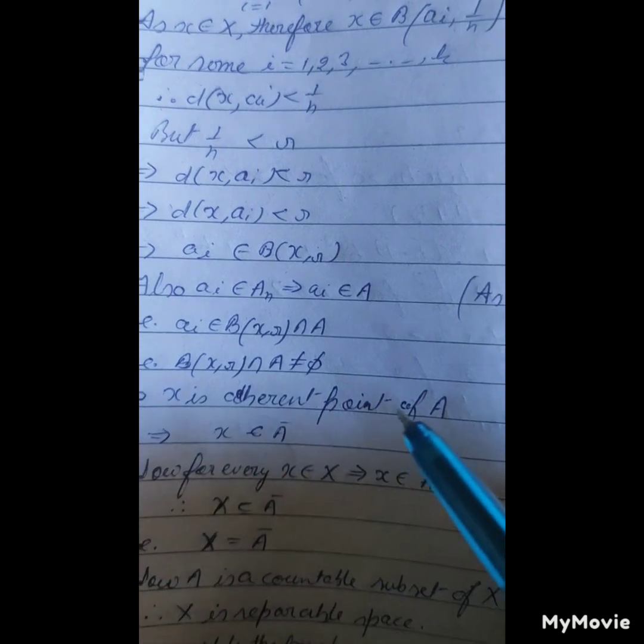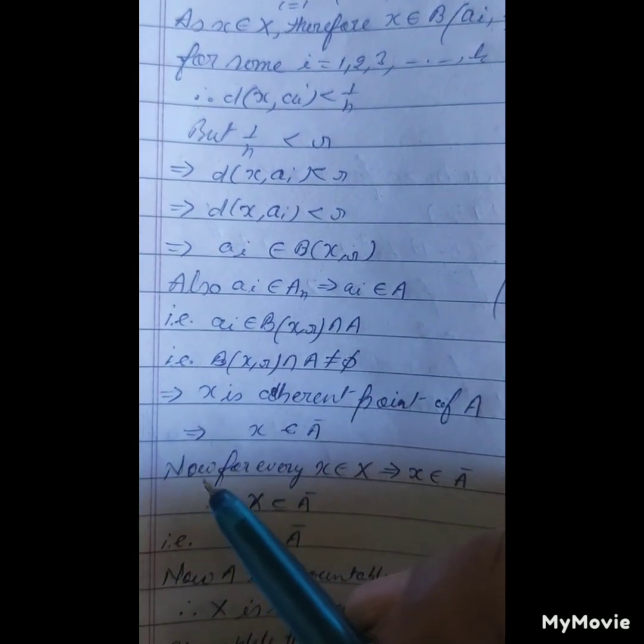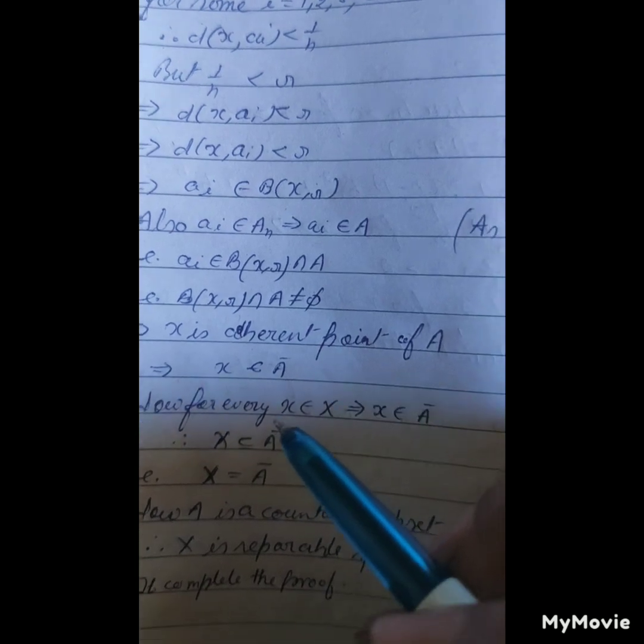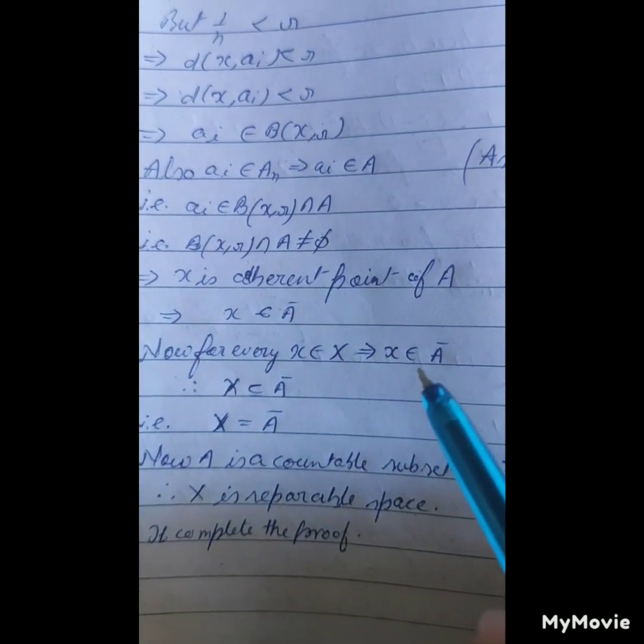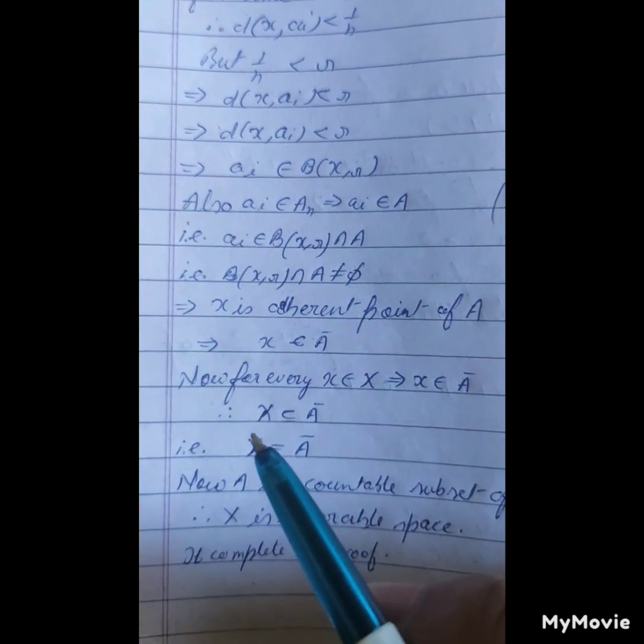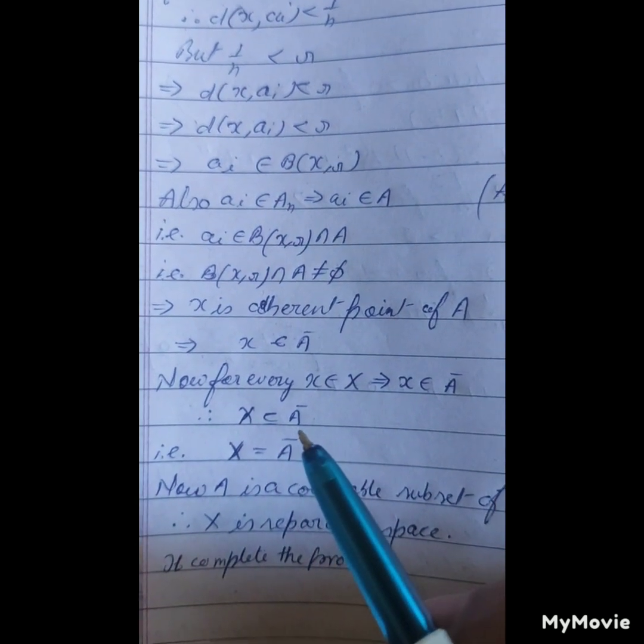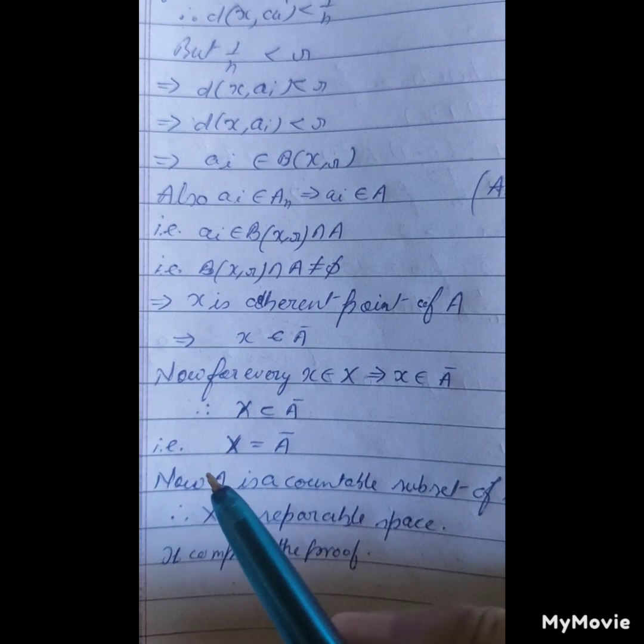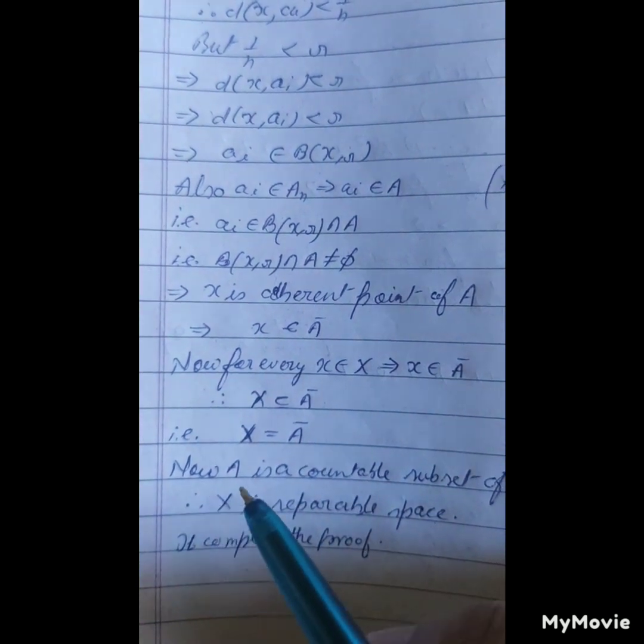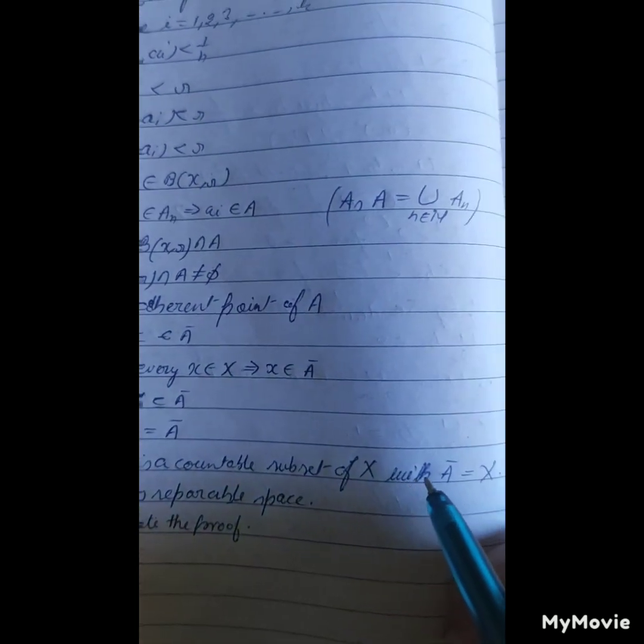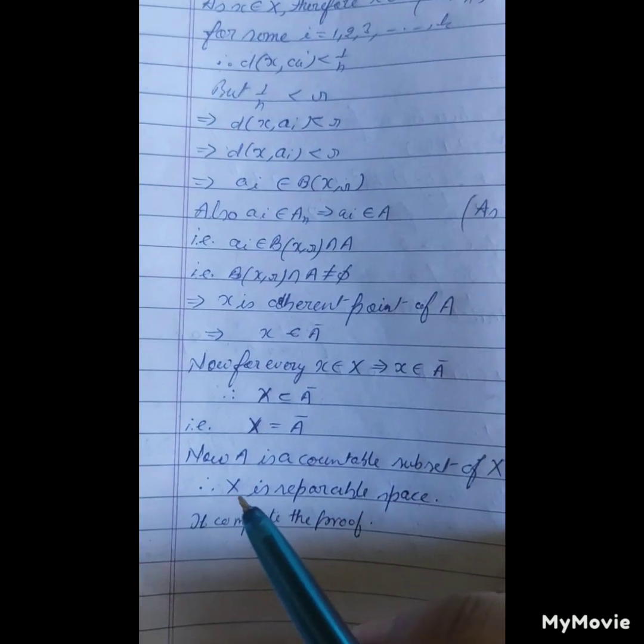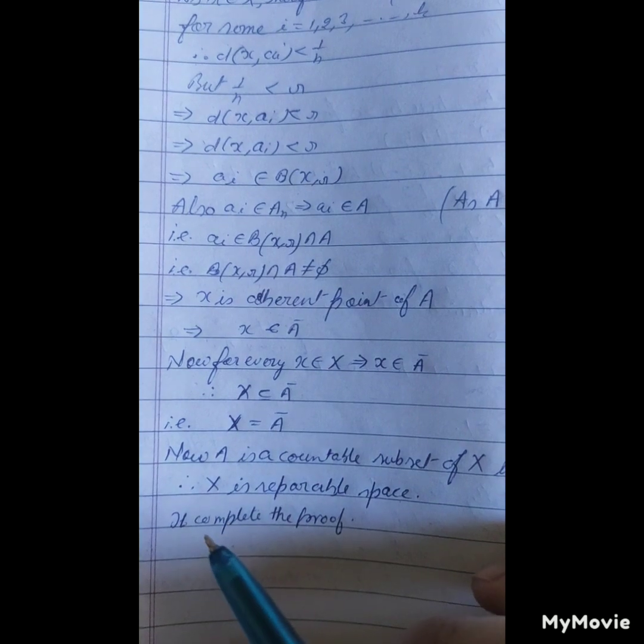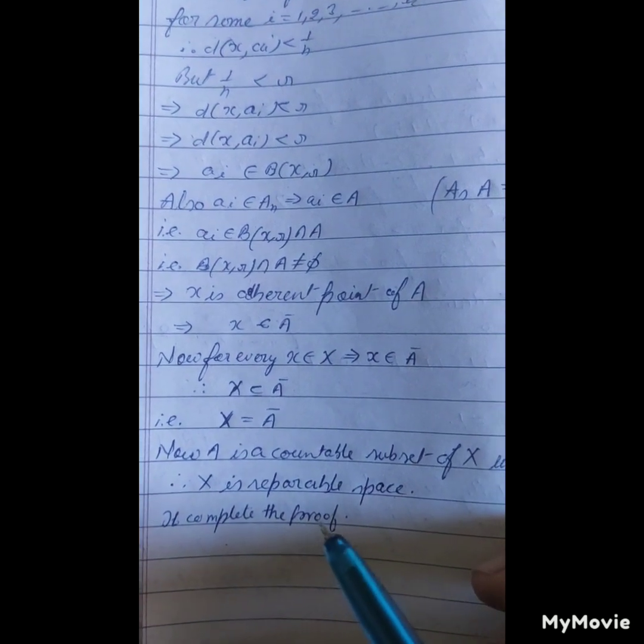Therefore x is the adherent point of A, which implies x belongs to A bar. Therefore every x belongs to capital X implies x belongs to A bar, so X is a subset of A bar. That is, X is equal to A bar. Now A is a countable subset of X with A bar equal to X, so X is a separable space. It completes the proof.